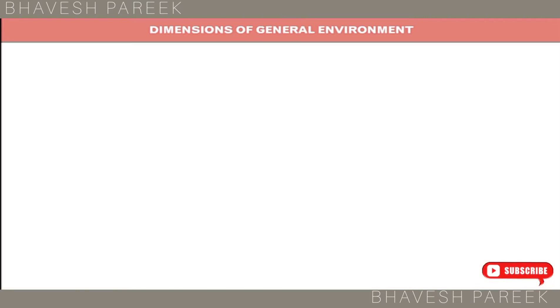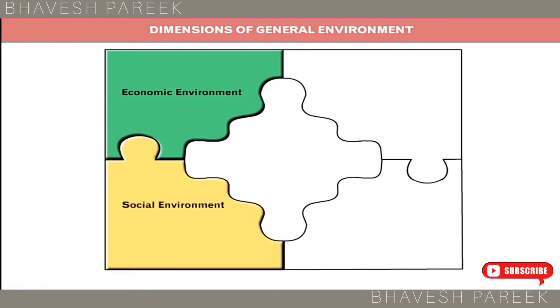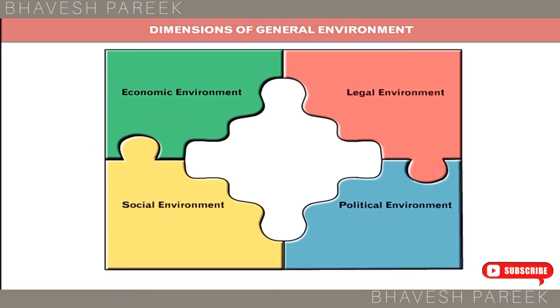Dimensions of General Environment: The dimensions of General Environment are Economic Environment, Social Environment, Political Environment, Legal Environment, and Technological Environment.